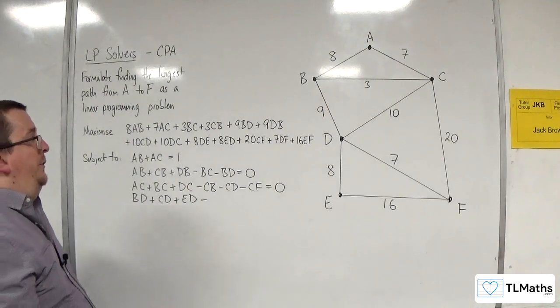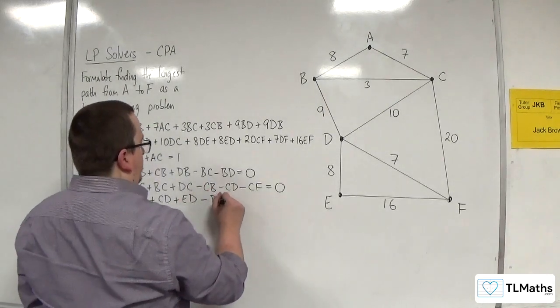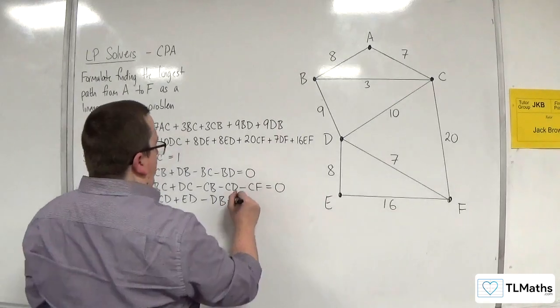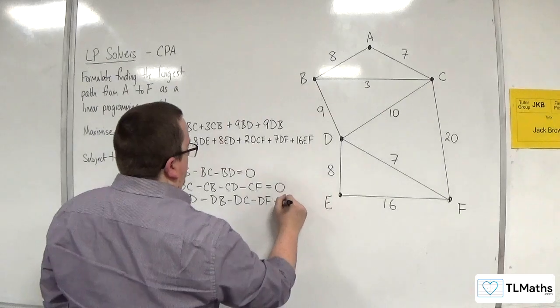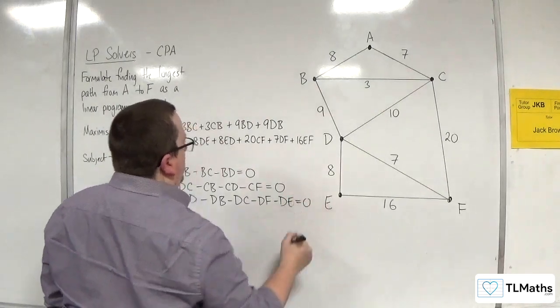Take away all the routes coming out, so DB, DC, DF, and DE. That's got to be equal to 0.